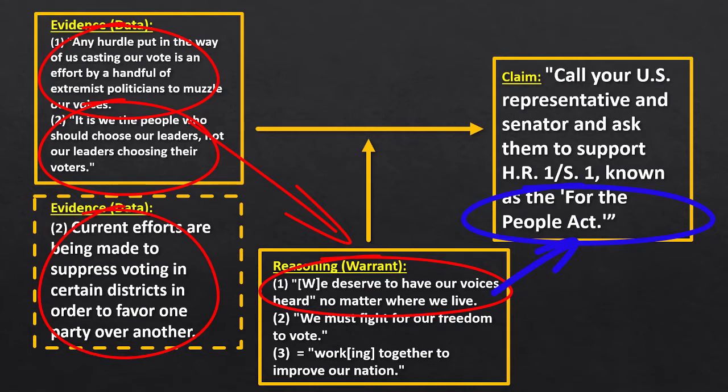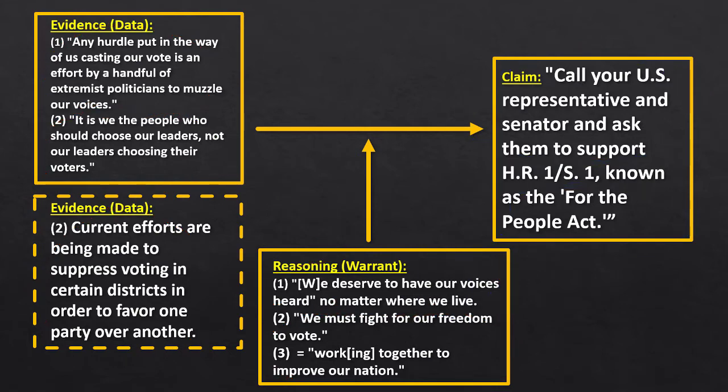So we need to fight for our freedom to vote, because fighting for our freedom to vote is going to make our nation better. And so because these things are happening, and we need to fight to prevent them from happening, this is something that we need to do — we need to call our U.S. representative and senator and ask them to support the For the People Act.